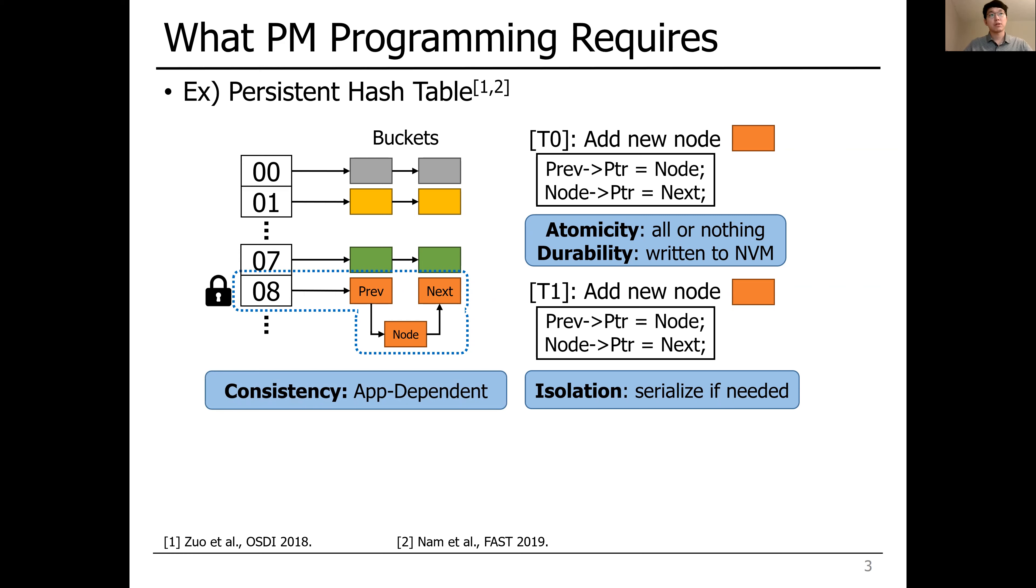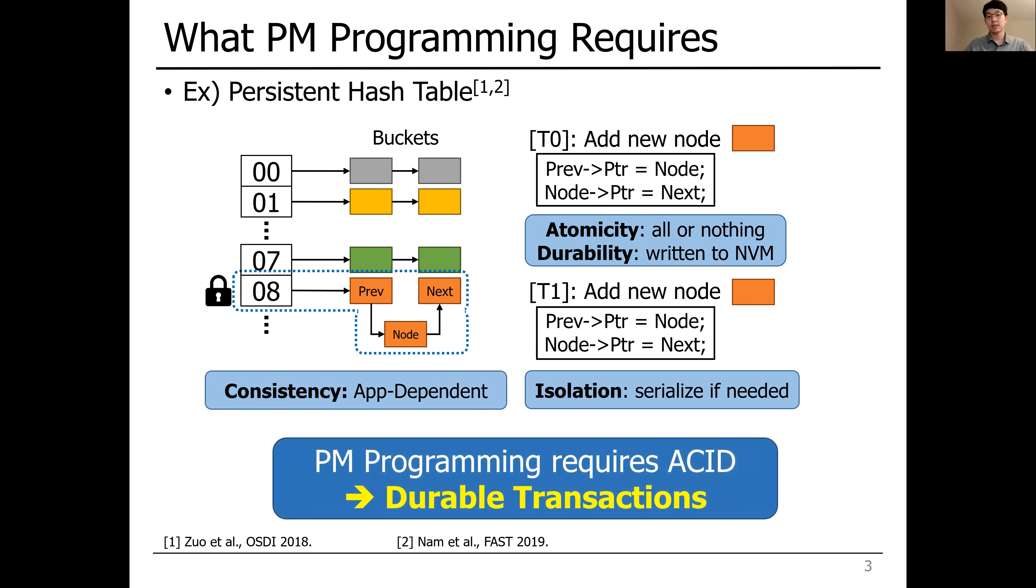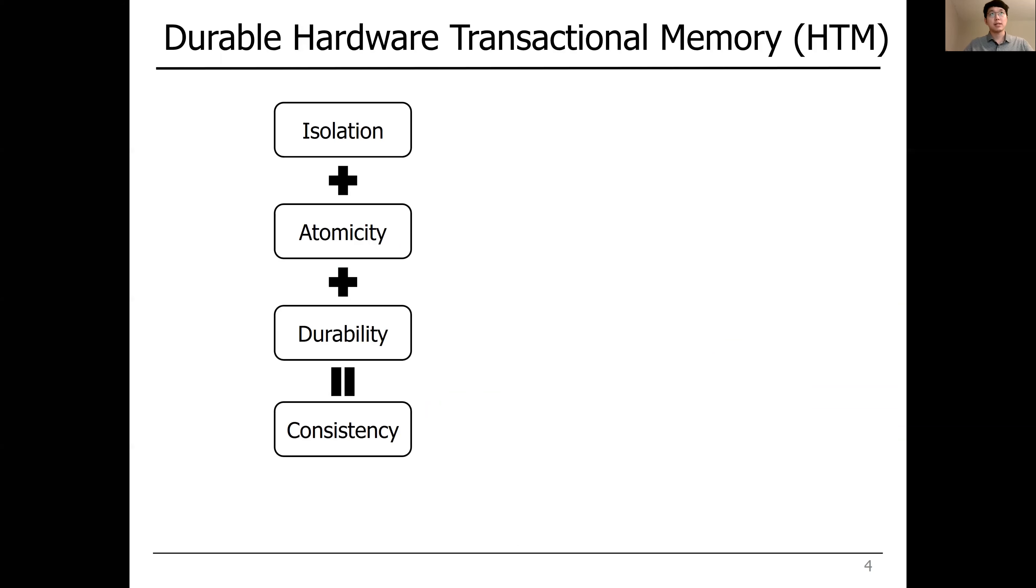Therefore, persistent memory programming requires ACID properties where durable transactions have been proposed. ACID properties are not independent, but they correlate with each other. For example, isolation, atomicity, and durability provide consistency.